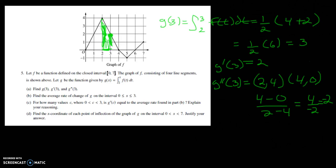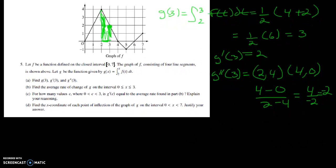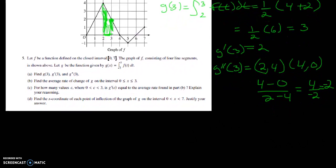Let's read part B of the question. Part B of the question says find the average rate of change on the interval from 0 to 3. So if you want to find the average rate of change you got to do f of b minus f of a all over b minus a.